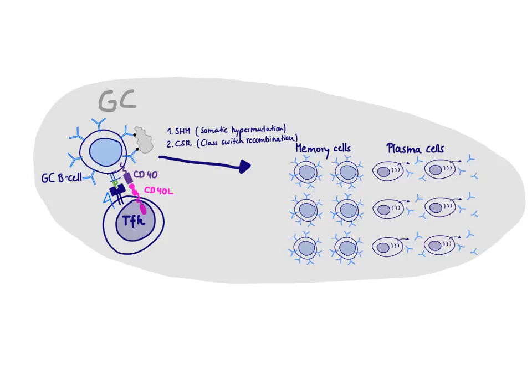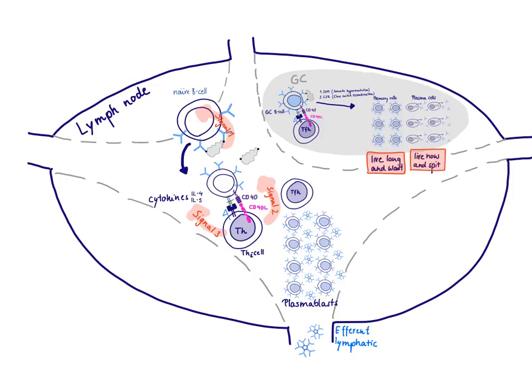The result of all these processes is two sets of mature B-cells: memory cells and plasma cells. We have now discussed all the processes that started from activation of the B-cell, through differentiation and maturation, and finally produced these two sets of mature B-cells.